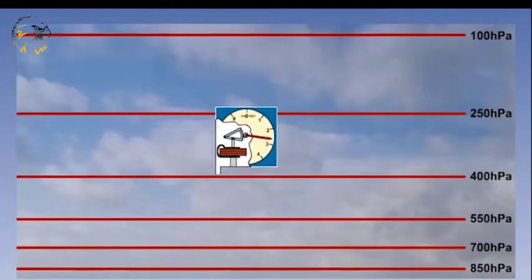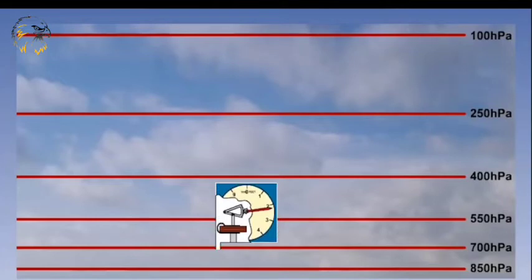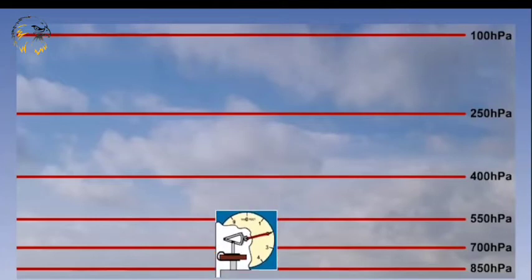Conversely, when the aircraft descends through the atmosphere, the pressure increases and the pointer moves anti-clockwise, showing a decrease in height.